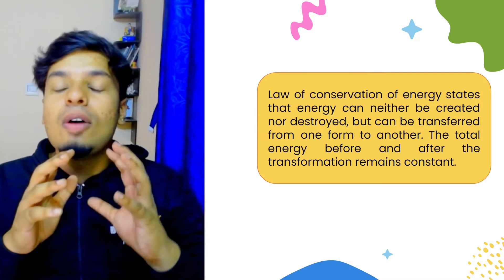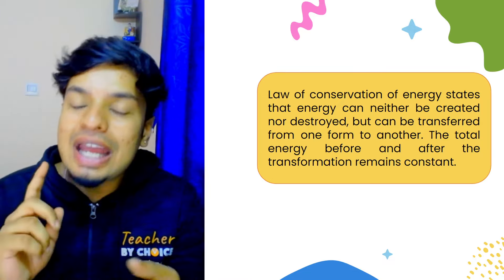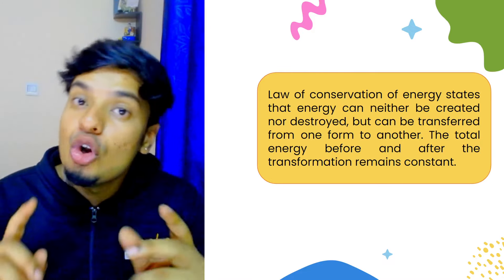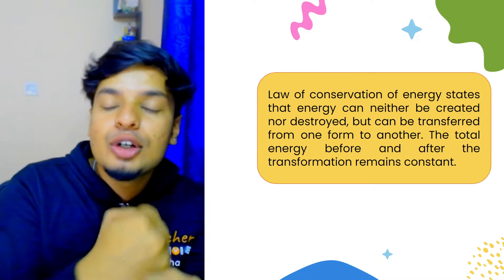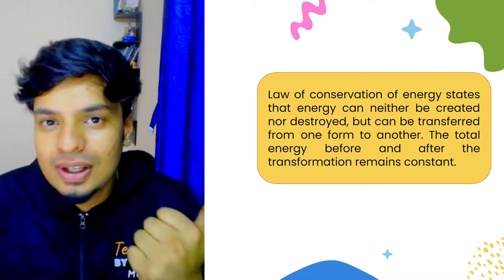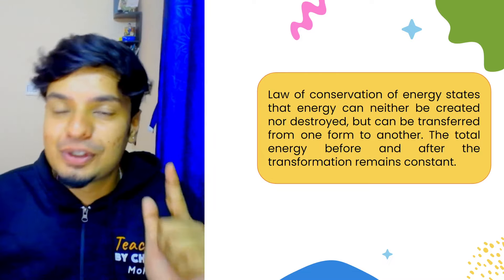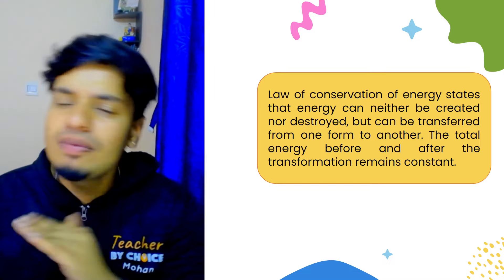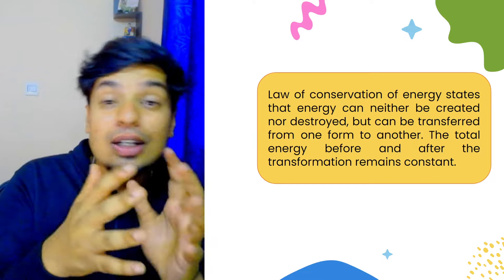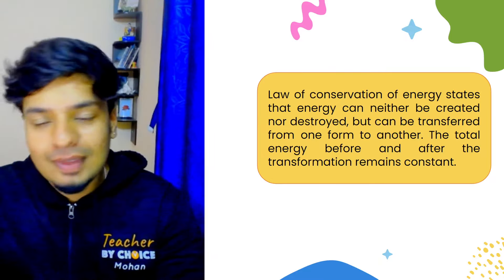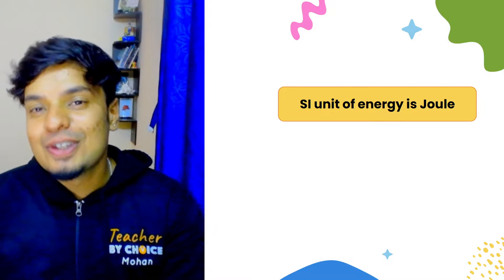There's also a law of conservation of energy. This law states that energy can neither be created nor destroyed but can be transferred from one form to another. You can never create energy, you can never destroy it—it's just converted from one form to another. The total energy before and after transformation will remain constant. And the SI unit of energy is joule.